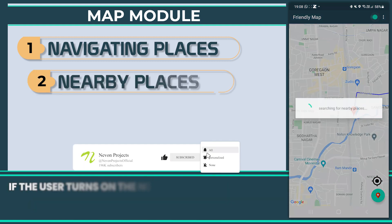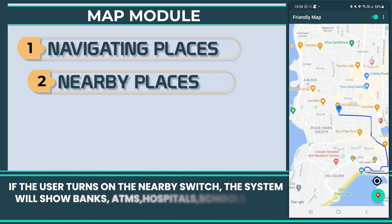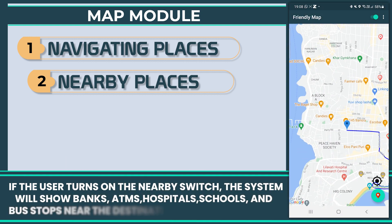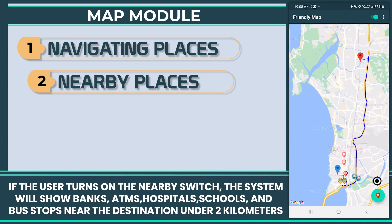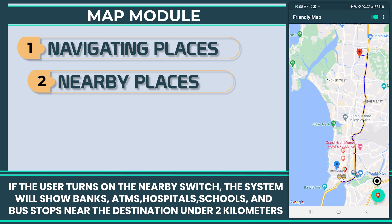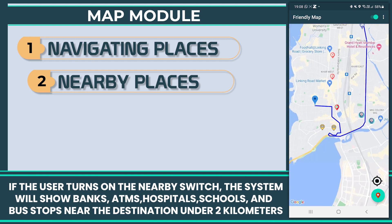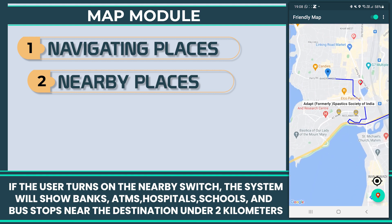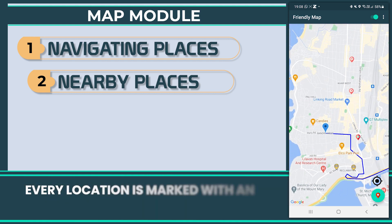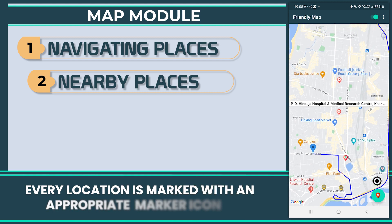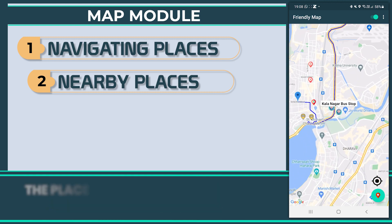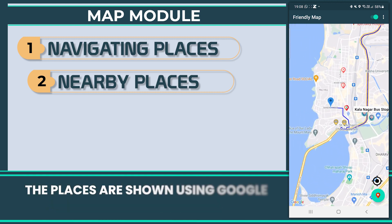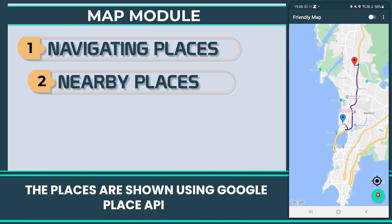If the user turns on the nearby switch, the system will show banks, ATMs, hospitals, schools, and bus stops near the destination under 2 kilometers. Every location is marked with an appropriate marker icon. The places are shown using Google Places API.